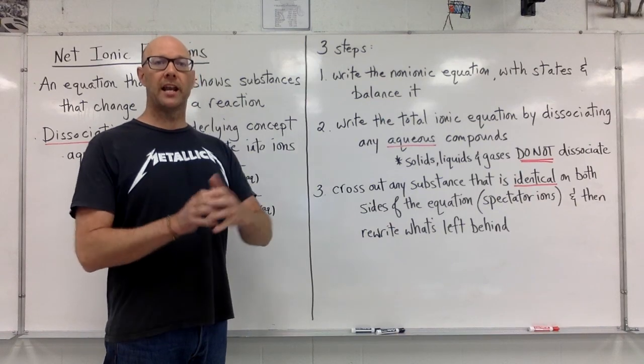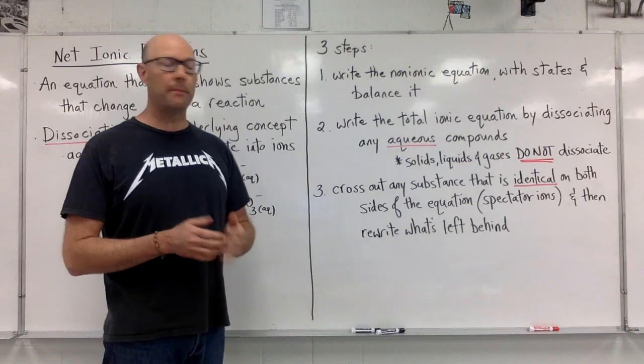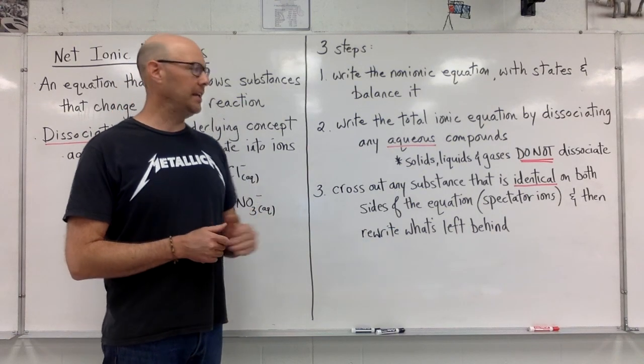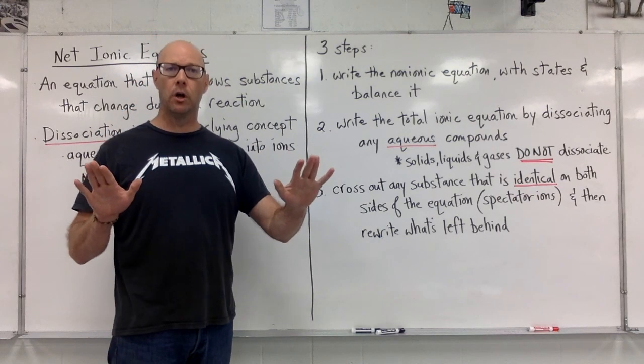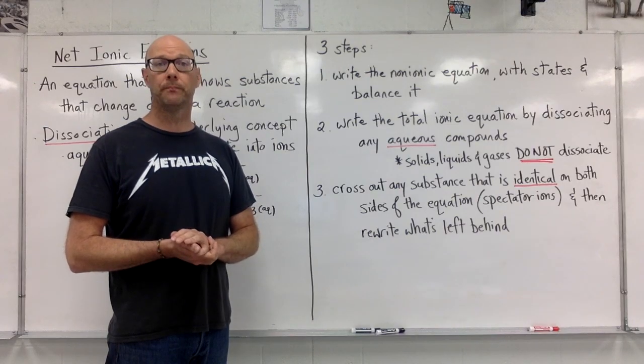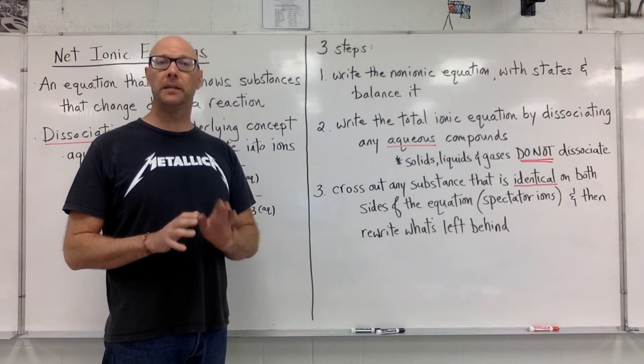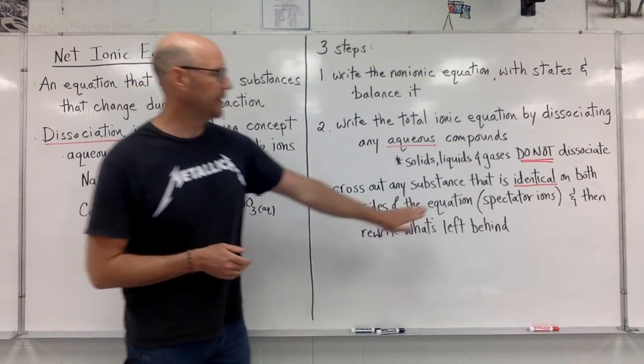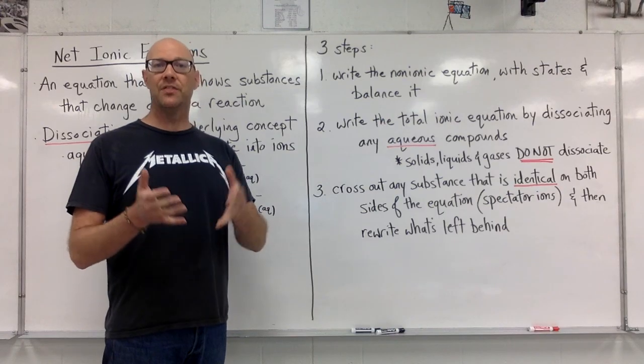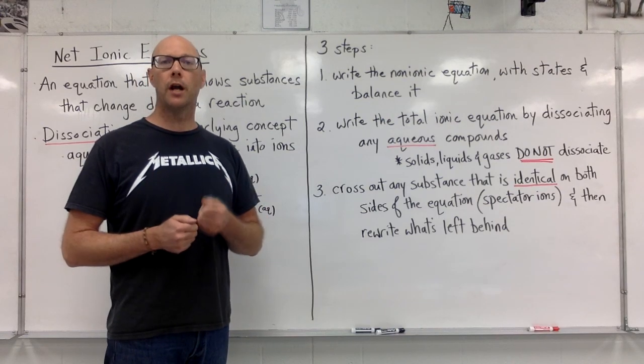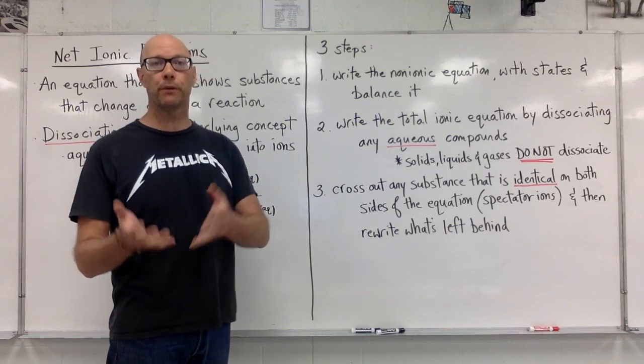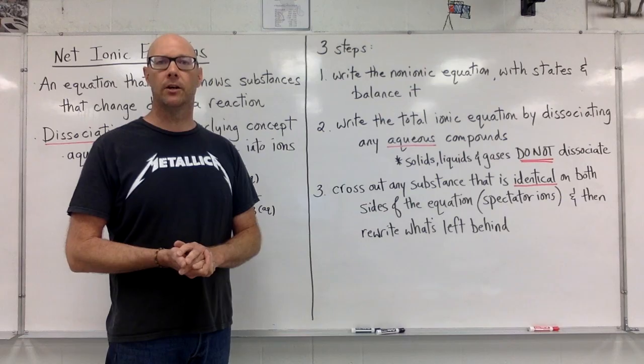When we do that, we're going to have a very long line. We're going to examine that to see if there's anything that's identical on both sides. Anything that shows up the same on either side of the equation, we're going to cancel out. We're going to cross those things out. Those are going to be ions. We're only going to be canceling ions, and they have a unique name. They're spectator ions. They're present in the system, but they are not undergoing change during the reaction. They're spectators, but they're not participating.